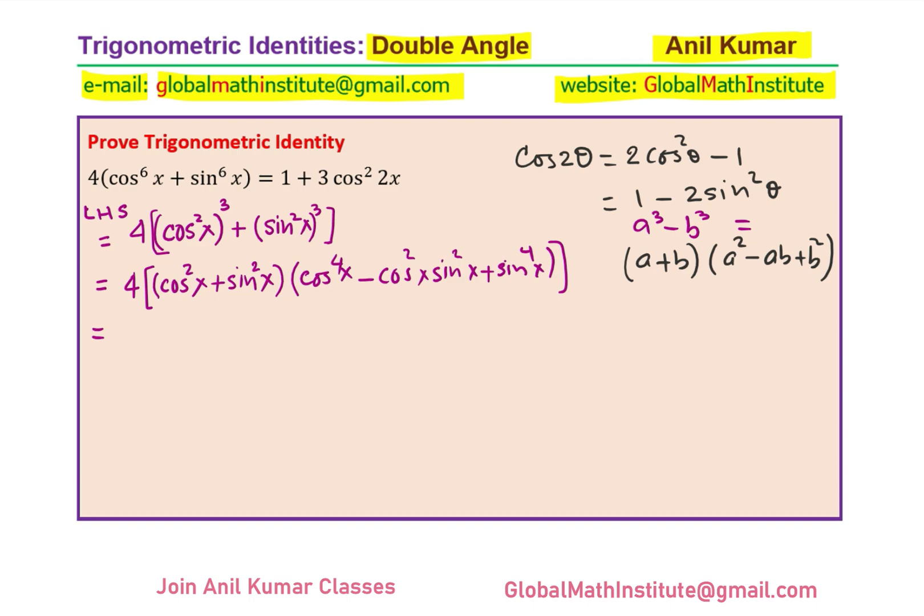cos square x plus sin square x is 1. So we can open the bracket, that becomes 1 and we have cos to the power of 4x plus sin to the power of 4x. Well, that reminds us we could use the formula for A plus B whole square.